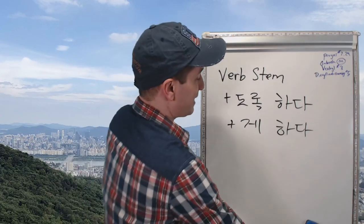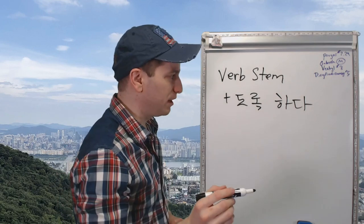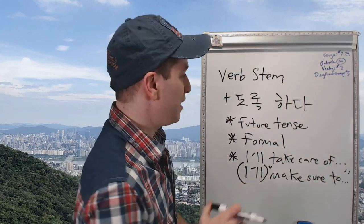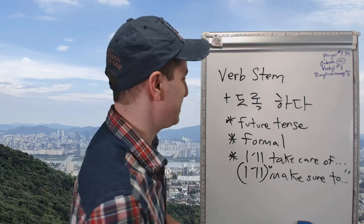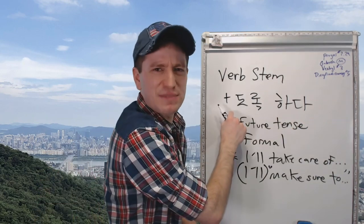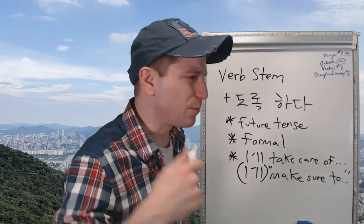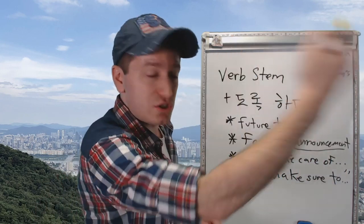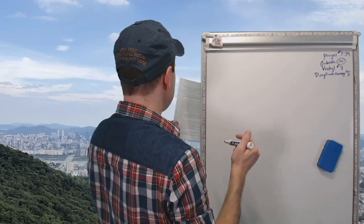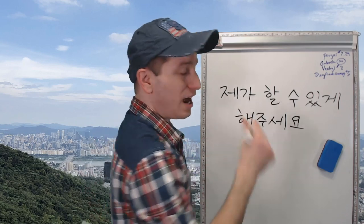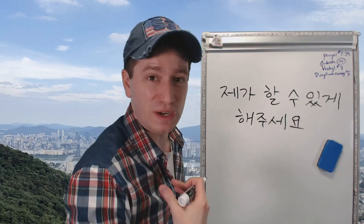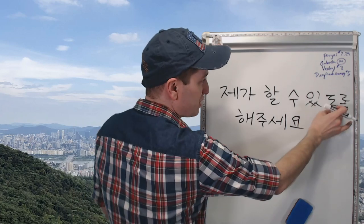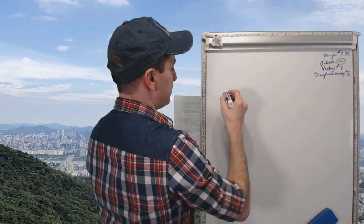However, 도록하다 has one additional meaning. It can be used as a formal form to say something like 'I will take care of it,' 'I'll make sure to,' or 'you make sure to.' If you say 하도록 하겠습니다, literally you're saying 'I will do something so that I do something' — it's a formal way of saying I'm going to take care of this, I'll make sure to do something. You can also say 제가 할 수 있도록 해주세요, which is the same as 제가 할 수 있게 해주세요 — 'please let me do it' — but slightly more formal.